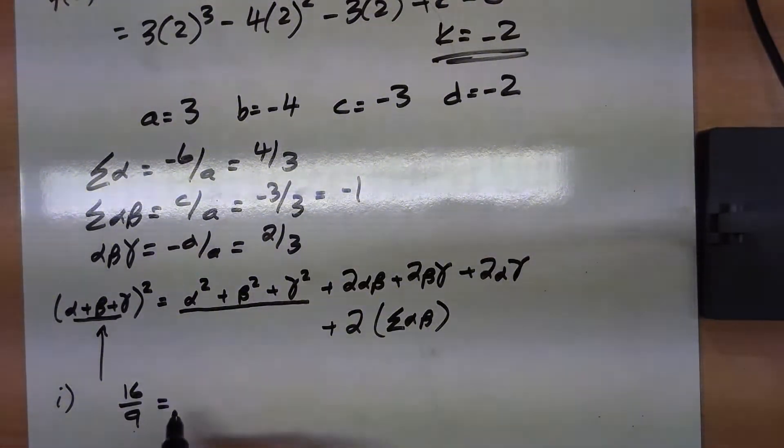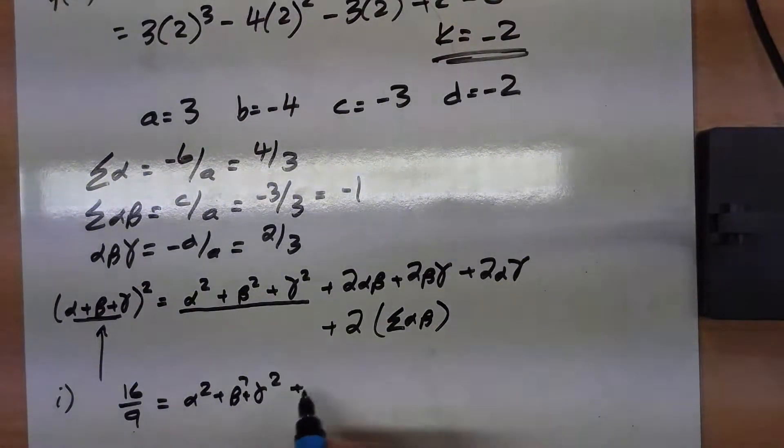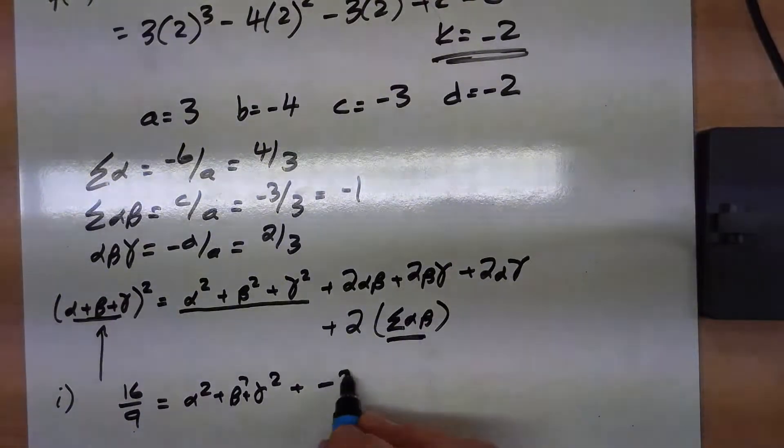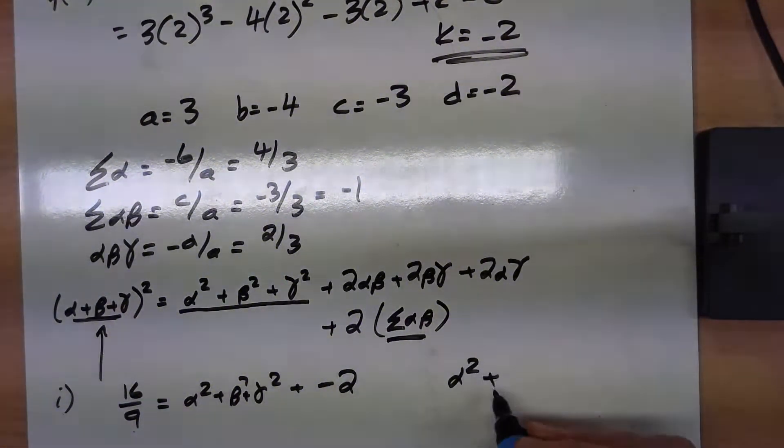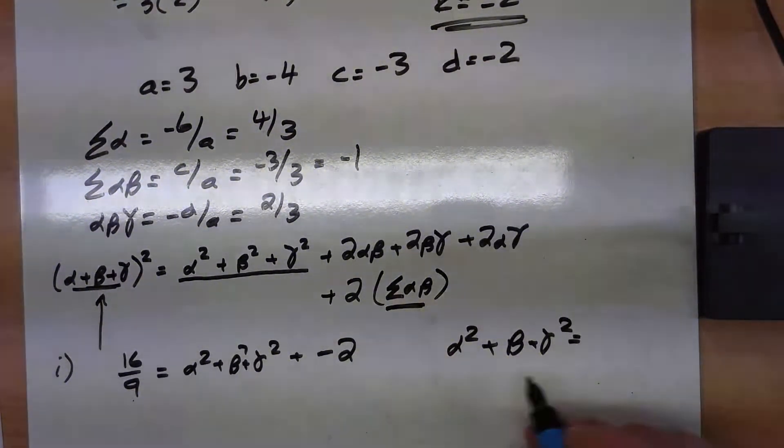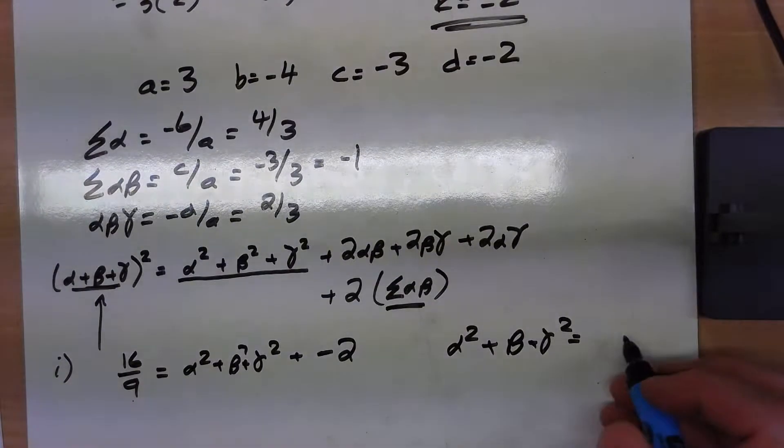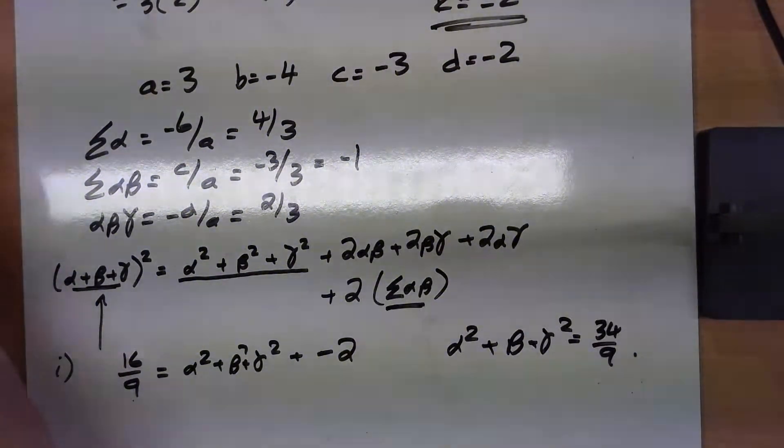Part 2 then says, what is this bit here? That is minus 1. So we've got minus 2 on the end there. Add the 2 to both sides. So that's 18. 18 and 16 is 34 over 9. It's that bit there.